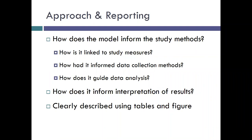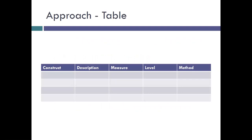One way to help clarify and demonstrate how a model is informing a study in a grant or paper is through tables and figures. I included a blank table here as a template or example with some possible column headings where you could list rows for each construct. This table suggests providing the construct you're using and the definition by which you're defining it, what measure will be used to assess the construct, at what level that construct will be assessed — for example, provider, clinic, or client — and the method or methods, for example, qualitative, quantitative, or mixed, you'll use to collect your data. In addition to tables, figures can also be helpful in describing how a model is used and informs the study. Recreating a published figure and adapting it to fit your own study can help show constructs and relationships.